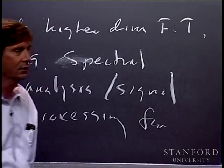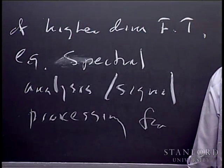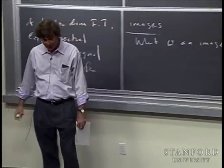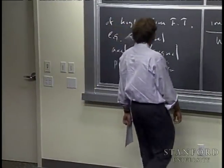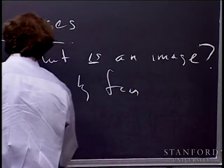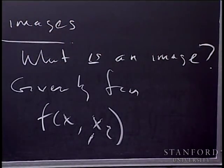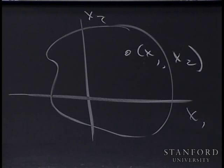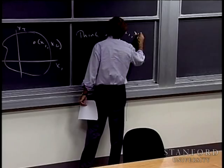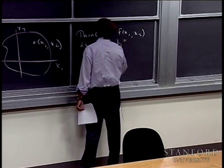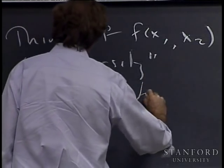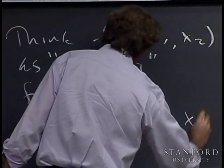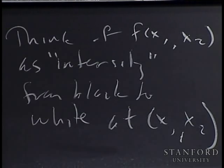What is an image after all? What is a mathematical description of an image? A two-dimensional image, at least mathematically, is given by a function of two variables, say x1 and x2 — a function f(x1, x2), where x1 and x2 vary over some part of the x1, x2 plane. At each point, what the function prescribes is the intensity.